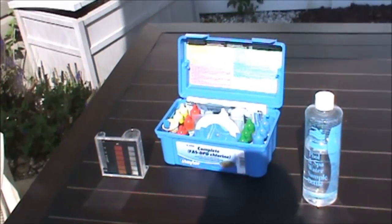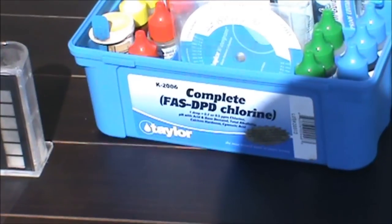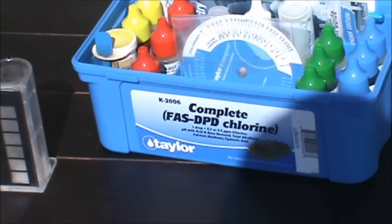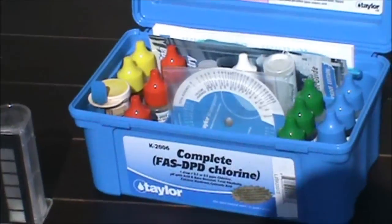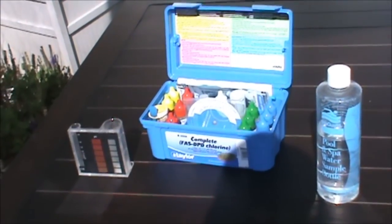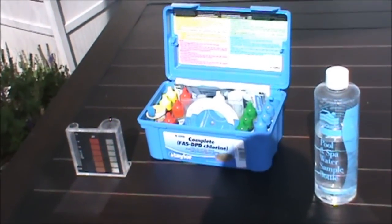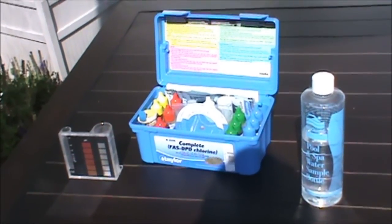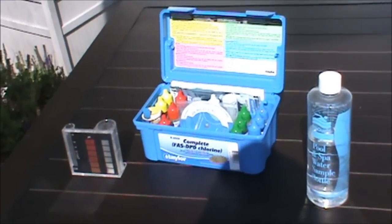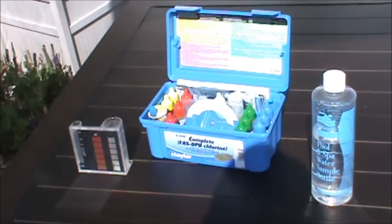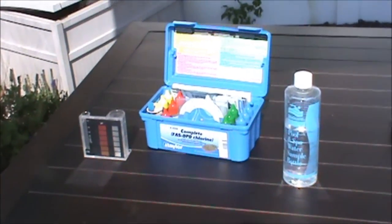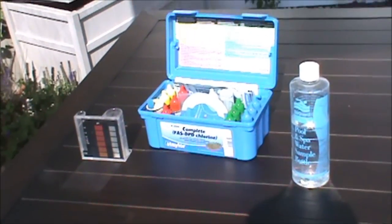If you want to take care of your pool yourself, the first thing you're going to need is a good test kit. This one here is a Taylor K-2006 Complete FAS-DPD Chlorine Test Kit. This kit probably costs about 60 bucks. It'll last you at least a season and even more depending on how much you use it. You can always buy new reactants; you don't have to buy a whole kit.